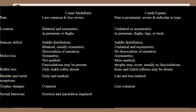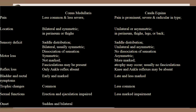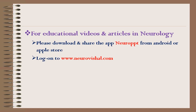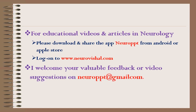Sexual function is more affected in conus lesions and less commonly and less markedly impaired in cauda equina lesions. The onset is usually sudden and bilateral in conus, but gradual and unilateral in cauda equina. I'll see you next time.